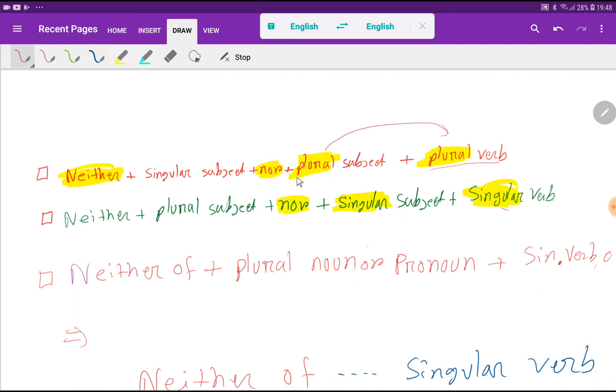Plural subject takes plural verb, right? Neither + plural subject + nor + singular subject takes singular verb. The form of the verb will be determined by the subject after nor, so singular subject takes singular verb.